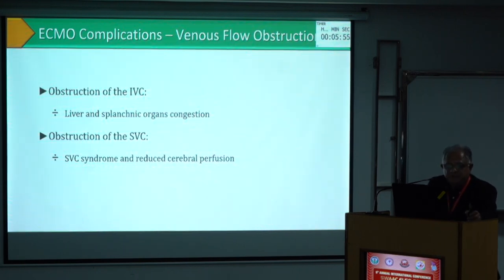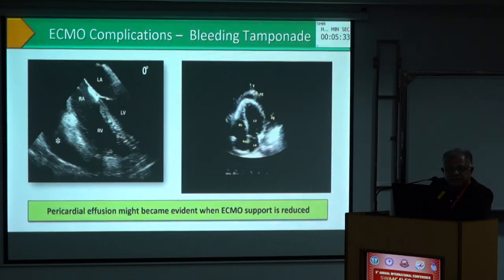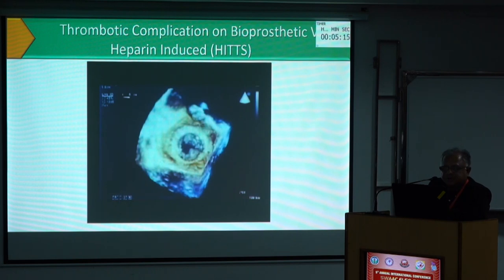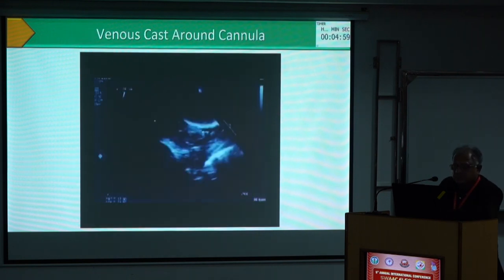IVC obstruction can happen leading to peripheral congestion and liver congestion. If there is SVC obstruction, it will lead to SVC syndrome. Tamponade can happen particularly in cath lab disasters, and here you can see a significant collection. Thrombus can develop in the veins, and you have to rule out these complications. You can see RV thrombus here, and in 3D imaging you can see clots around the cannula.